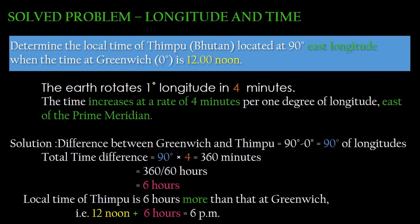Determine the local time of Thimphu, Bhutan, located at 90 degrees east longitude, when the time at Greenwich (0 degrees) is 12 noon. The time increases at the rate of 4 minutes per 1 degree of longitude east of the prime meridian. The first step is to find out the difference between Greenwich and Thimphu: 90 degrees minus 0 degrees, which is equal to 90 degrees of longitude.